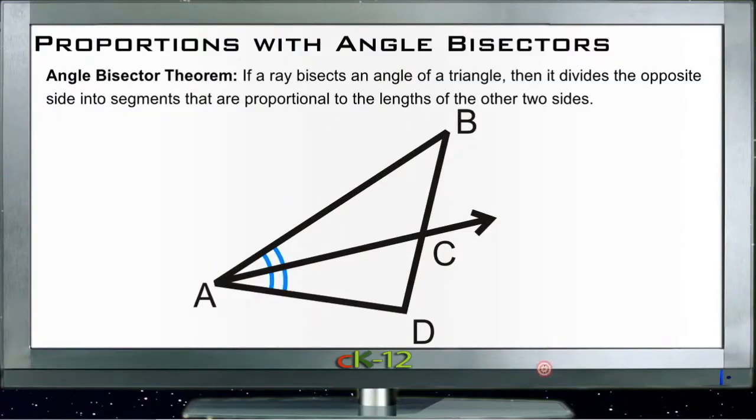Let's talk about the angle bisector theorem. This deals with proportions that are related to angle bisectors. Remember, if we have a triangle, we can bisect any one of the angles by drawing a ray that starts at one of the vertices, in this case A, and starts at one of the vertices.